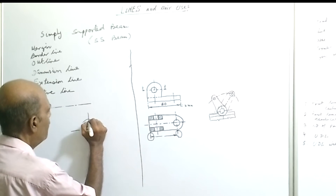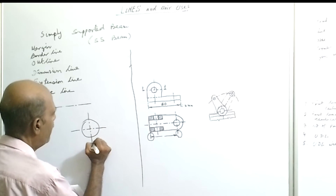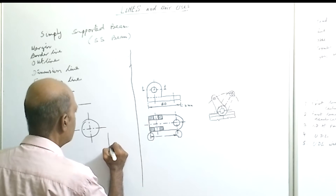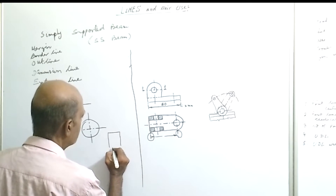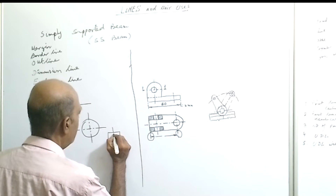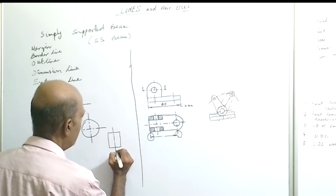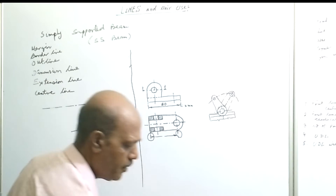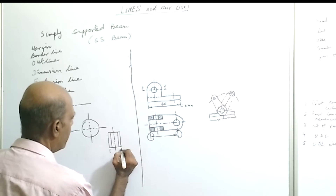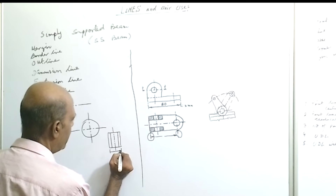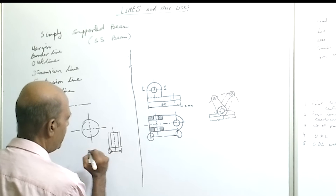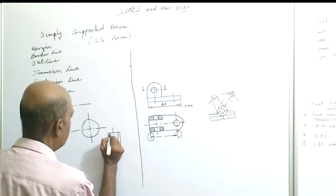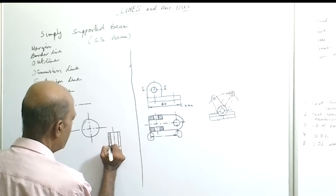To show a circle, center lines are placed from both sides at 90 degrees to each other. If it is a symmetrical object like a solid or hollow cylinder, the center line must be drawn. The outer diameter of the cylinder is shown with a dimension line and extension line.